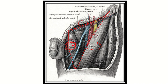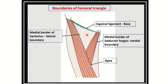The contents of the femoral triangle include the femoral artery, femoral vein, and femoral nerve as the three most important structures. Some other structures are also present, but these three are the primary contents.